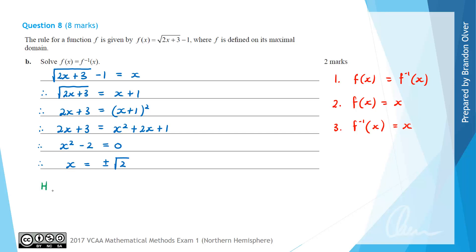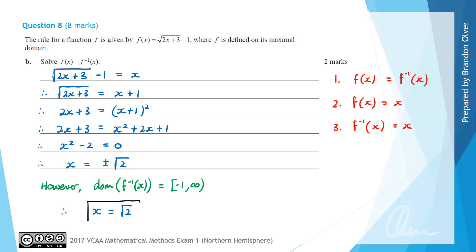However, this is very important: we found that the domain of the inverse function is negative 1 to infinity. Negative square root of 2 is smaller than negative 1, so it falls outside the domain. Therefore the only solution is x equals the square root of 2, and that is the answer to part b.